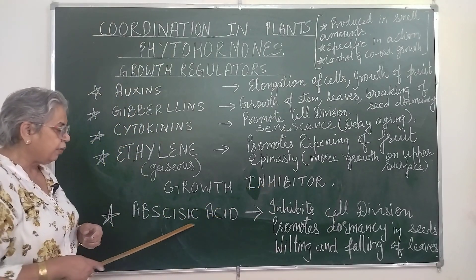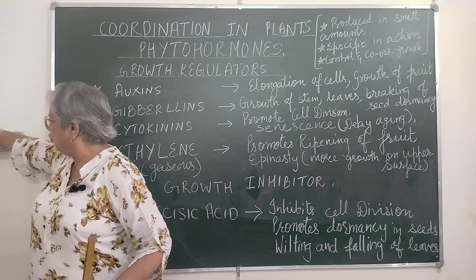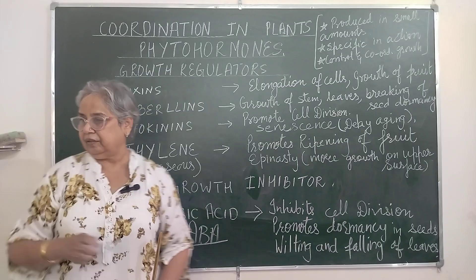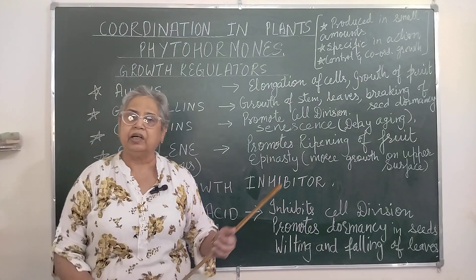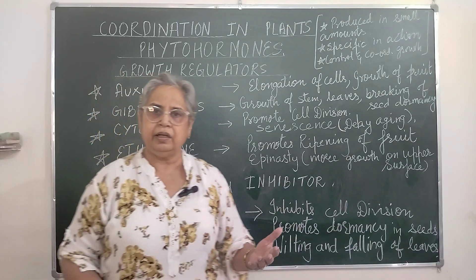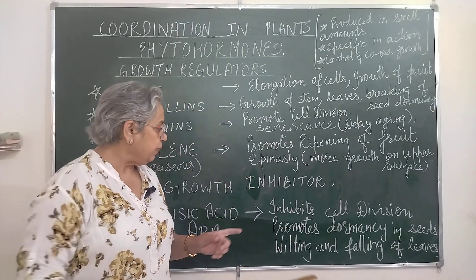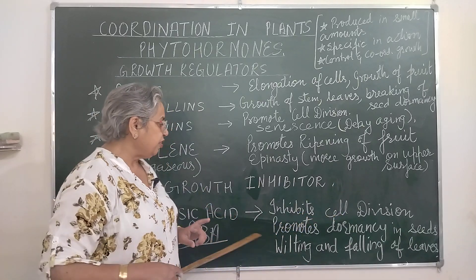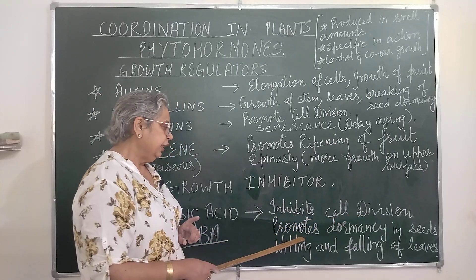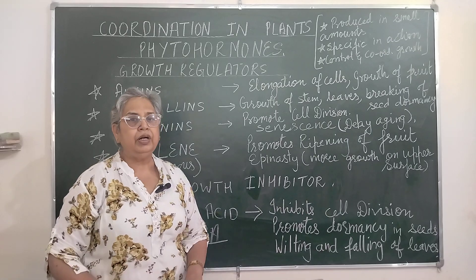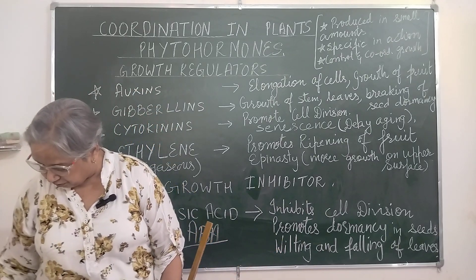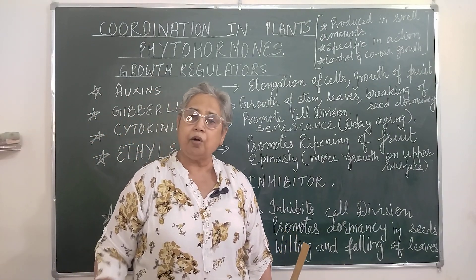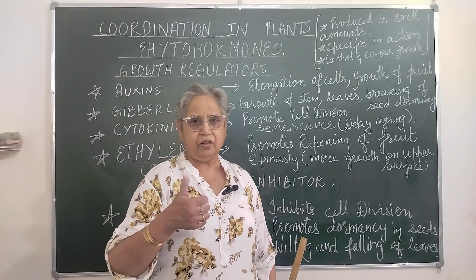The growth inhibitor — that is abscisic acid, abbreviated as ABA — is not active during spring. But during autumn, when the leaves are falling (patte jhad rahe hain), leaves are wilting and dormancy is there, it means abscisic acid is at work. It is inhibiting growth, promoting dormancy in seeds, and wilting and falling of leaves is taking place. This topic is of immense significance — one, two or more questions are always asked from this topic. Do well, all the best.